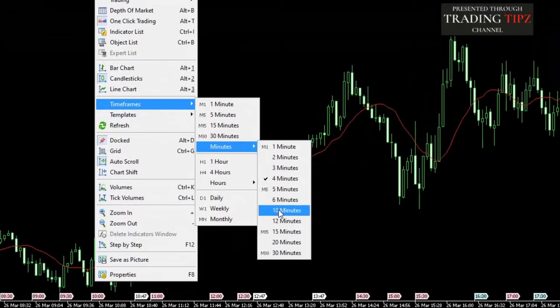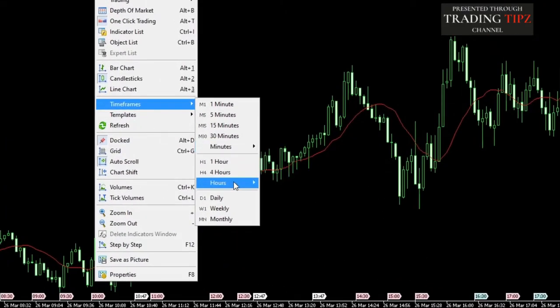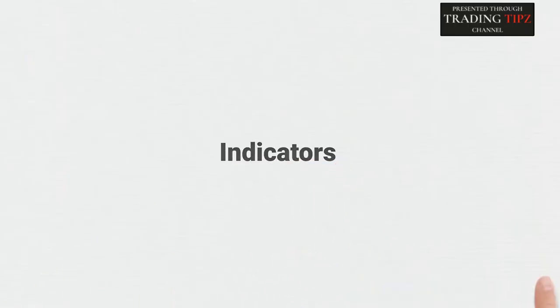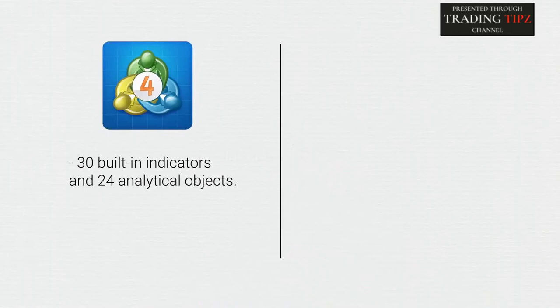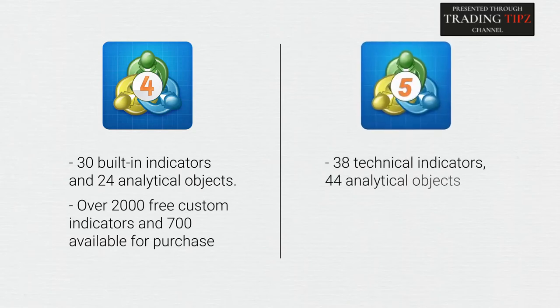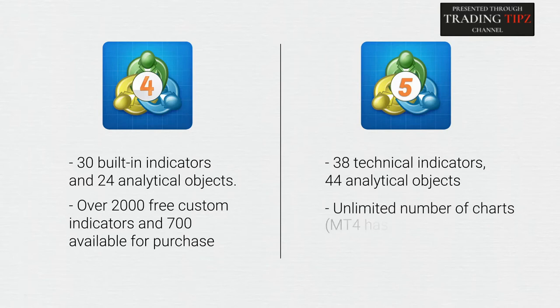This can give traders an edge for a deeper analysis of the market. MetaTrader 4 offers 30 built-in indicators and 24 analytical objects. Also, there are over 2,000 free custom indicators and 700 available for purchase. In contrast, MetaTrader 5 has 38 technical indicators, 44 analytical objects, and offers an unlimited number of charts. MT4 has a limit of 128 charts.